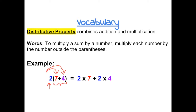So that means the 2 has to be multiplied with the first number, 2 times 7, and then the 2 needs to be multiplied with the second number, 2 times 4. And then whatever operation is on the inside, you just carry it over.